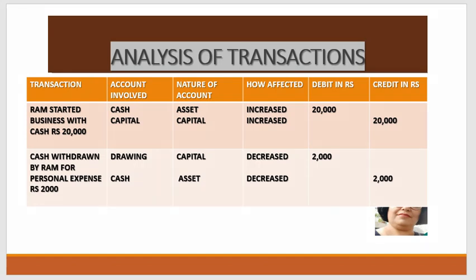So here we can see that Ram started a business with cash of ₹20,000. Here there are two things: one is cash and the other is capital. When Ram started the business, capital is introduced — cash account debit to capital ₹20,000.